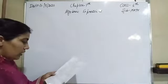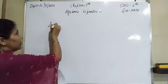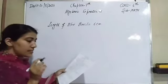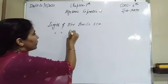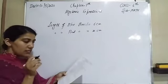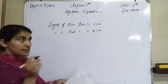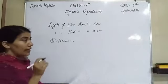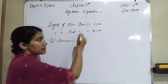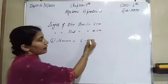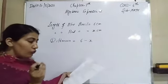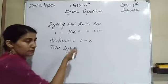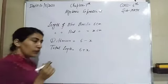The next question: the blue pencil is 6 centimeters long and the red pencil is x centimeters long. First, we have to find the difference in their lengths in terms of x — difference means subtraction, so it is 6 minus x. Second, we have to find the total length of both pencils — total length means addition, so it is 6 plus x.